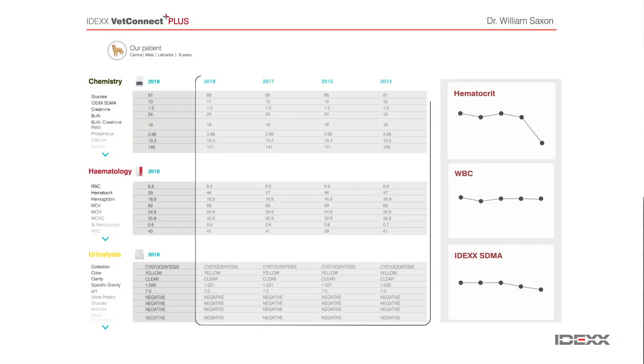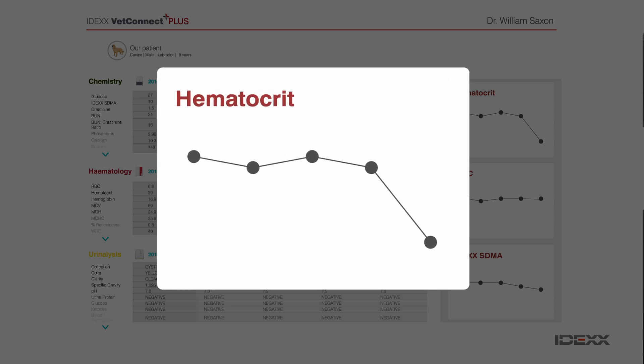But let's say that we have done serial minimum databases in this pet throughout its life, and looking back, trending the results, we find that his hematocrit has been stable at 47. And now he comes in and it's 39. So that's a whole different story than if we just had this one value of 39, which is normal, and had nothing to compare it to. Now I know — uh-oh — this is not normal for this dog. Something has affected this dog's hematocrit.